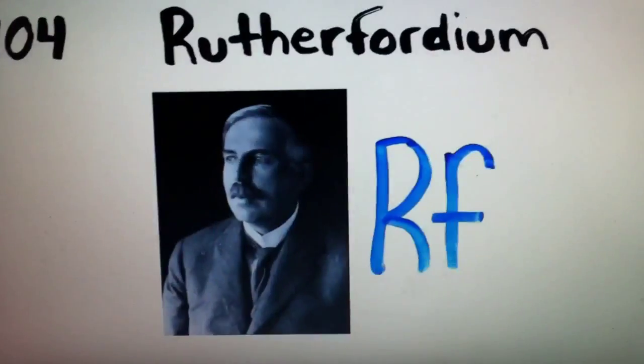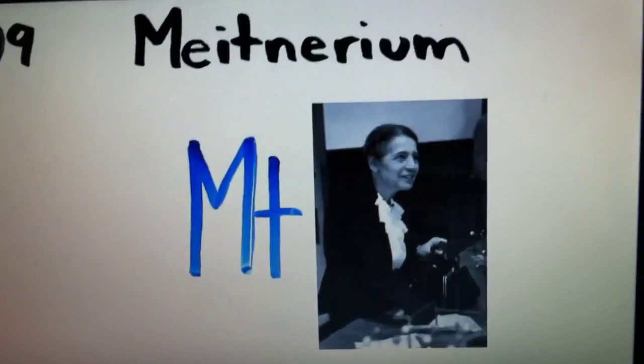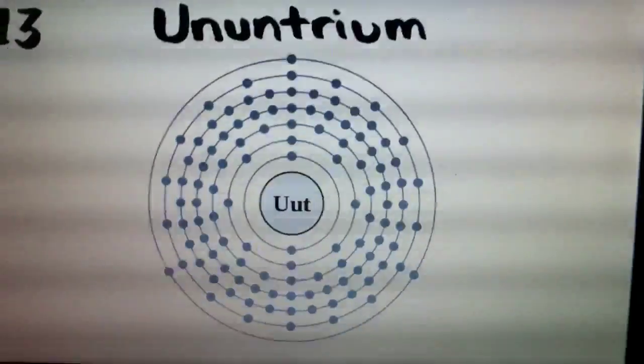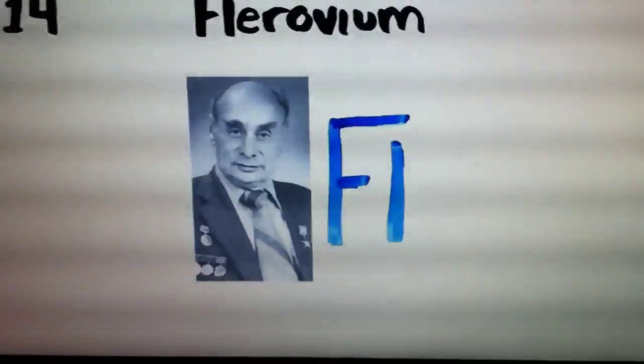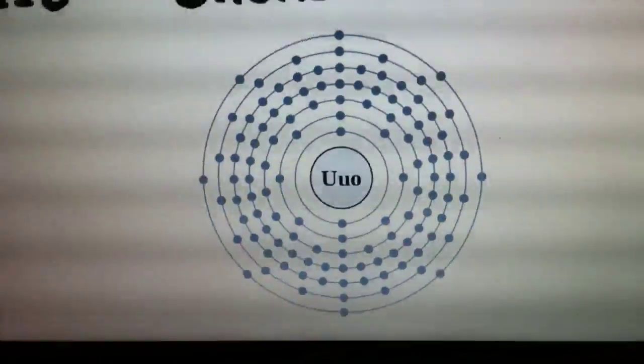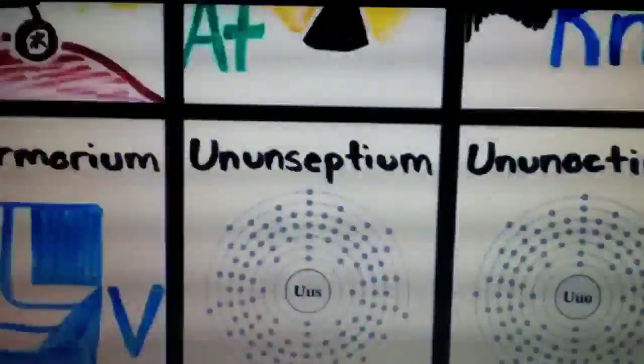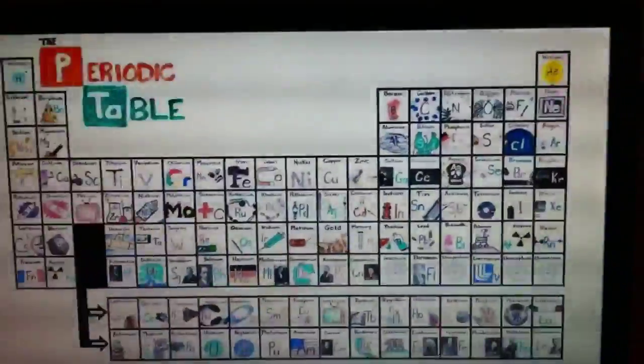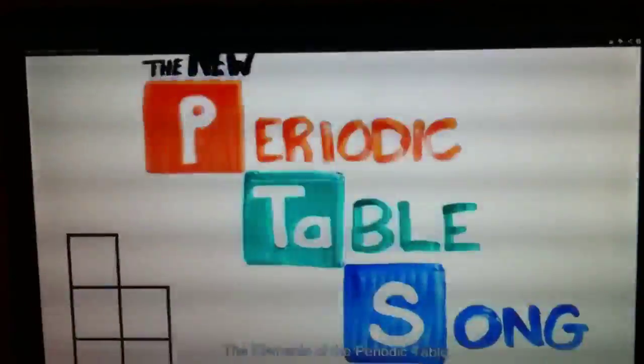Rutherfordium, dubnium, seaborgium, bohrium, hassium, meitnerium, darmstadtium, roentgenium, copernicium, nihonium, flerovium, moscovium, livermorium, tennessine, oganesson, and then we're done. Thanks.